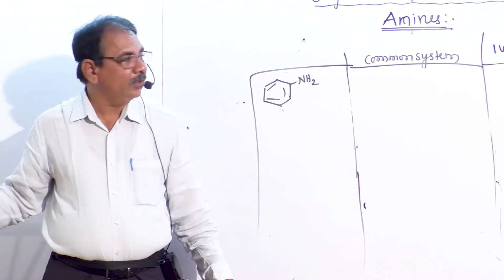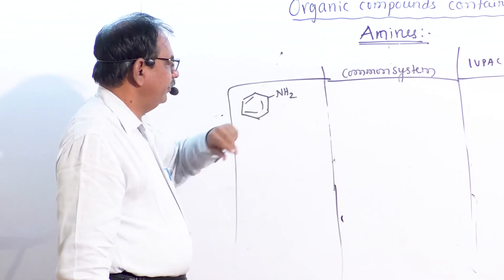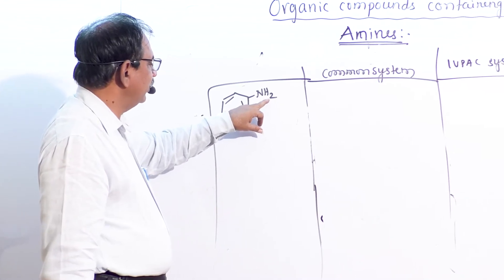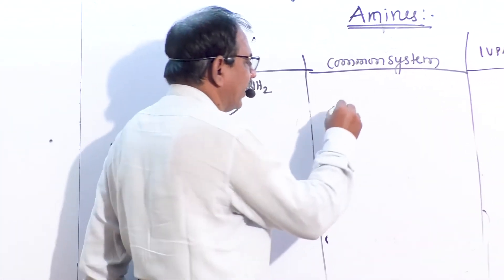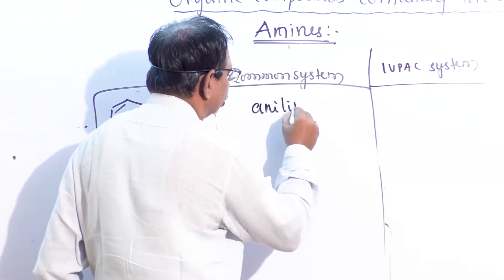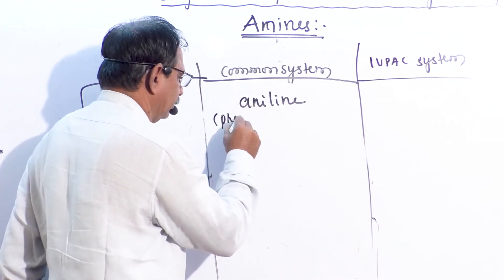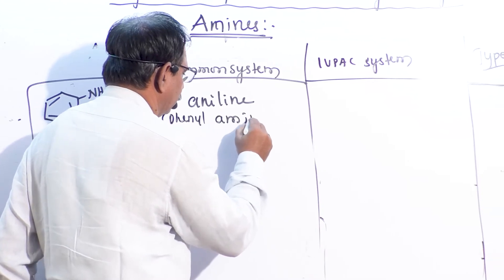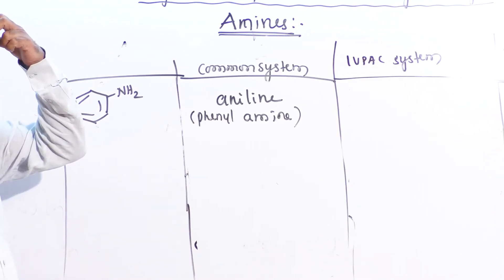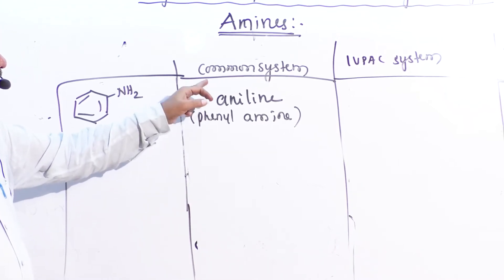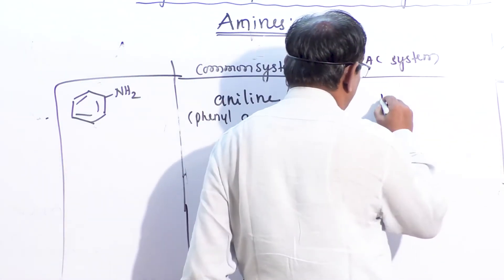Now we will discuss aromatic amines. When one hydrogen atom of ammonia is replaced by a phenyl group (benzene ring), the compound is called phenylamine or aniline. Aniline is the name used in both the common system and the IUPAC system. In IUPAC nomenclature it is also named benzenamine.